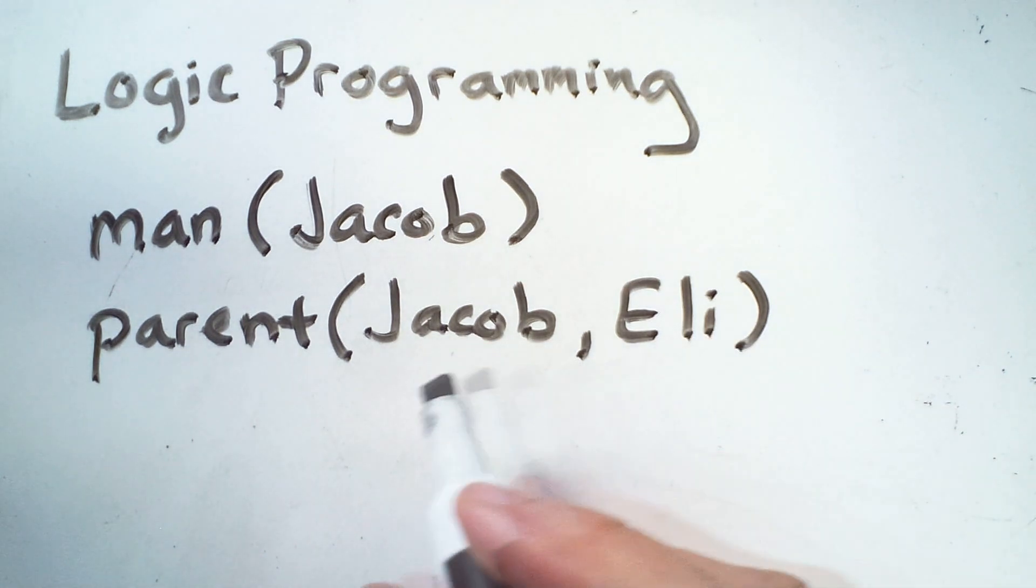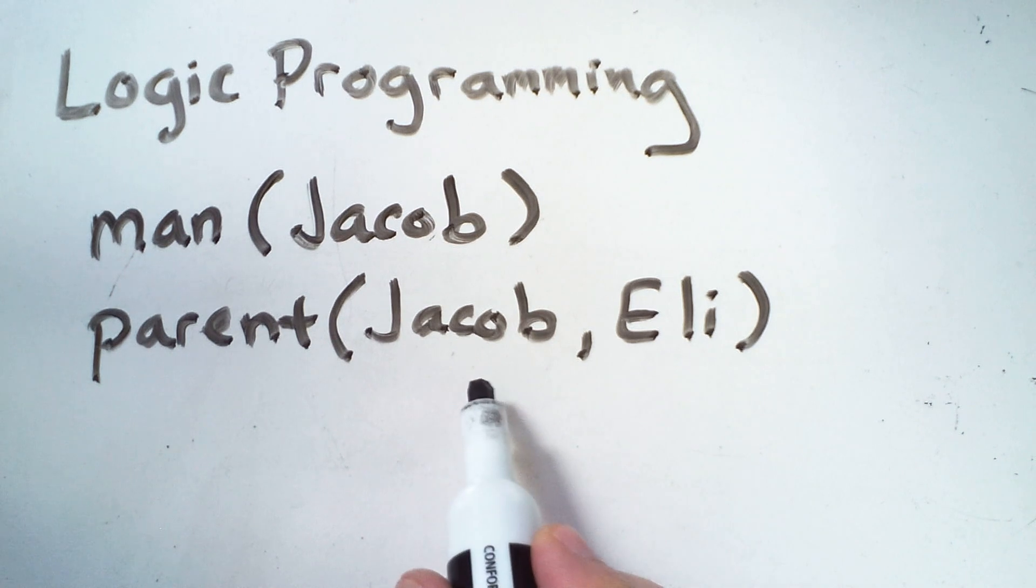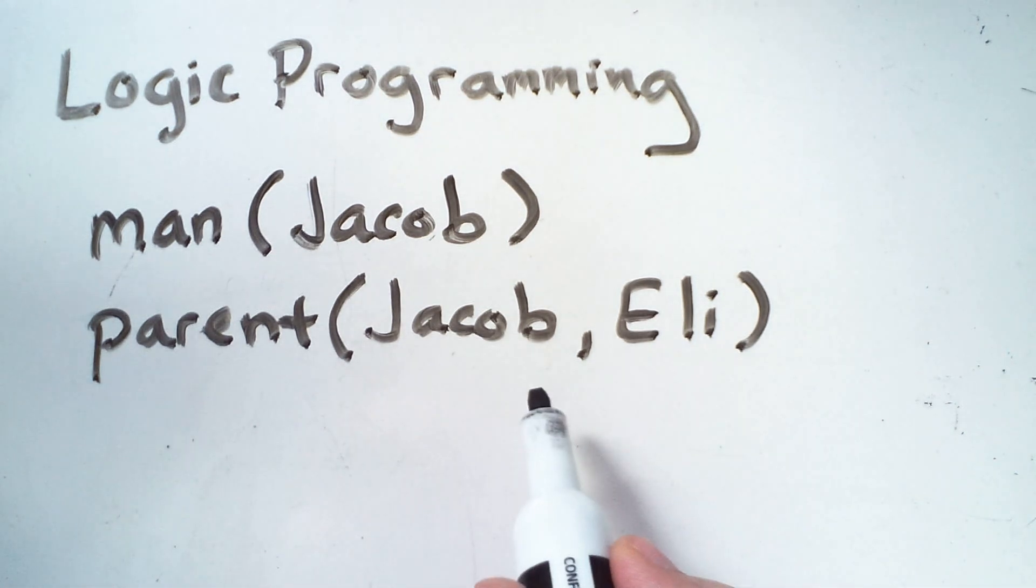Now, strictly speaking, this definition doesn't say anything about who is the parent, whether Jacob's the parent or Eli is the parent. The meaning behind the predicate has to come from elsewhere. Logic simply says that this is a true fact.